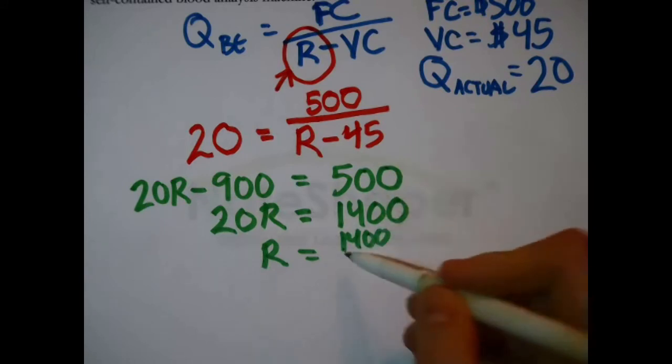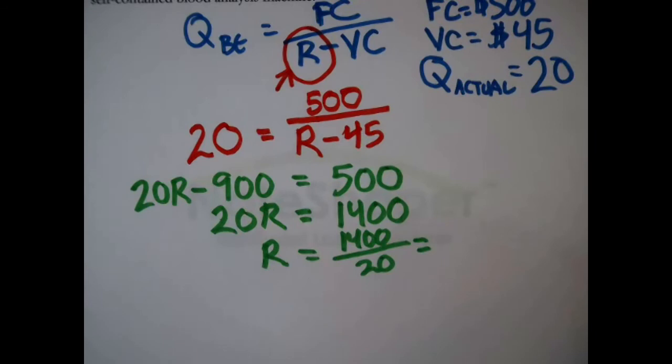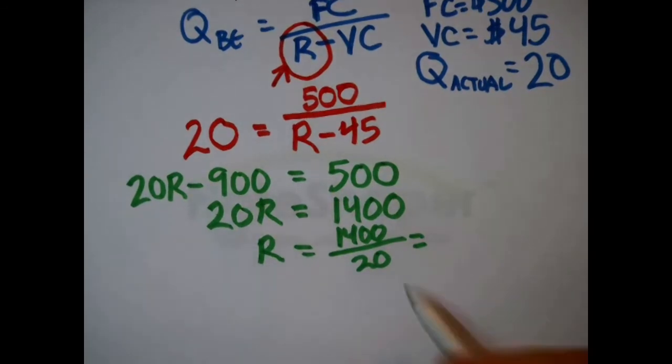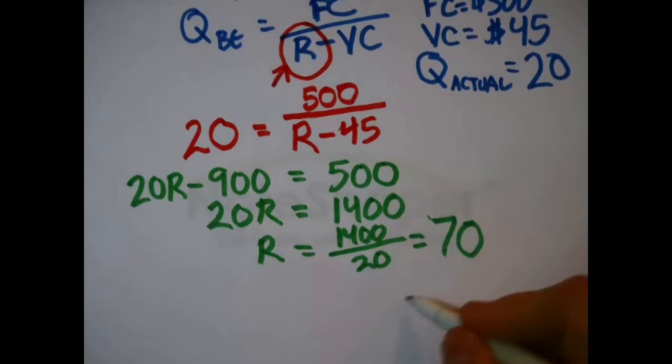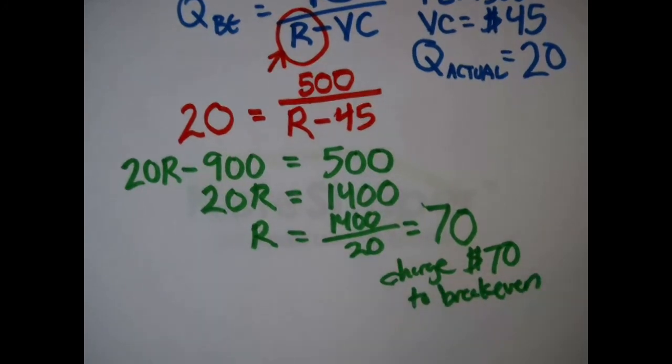So, the minimum amount that they need to charge their customers in order to break even on rental is 1,400 divided by 20, which is 70. They should charge a minimum of $70 to break even. That's what we just found out.